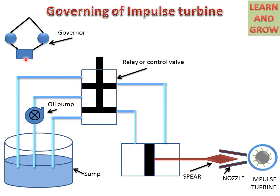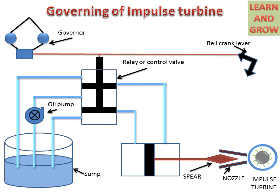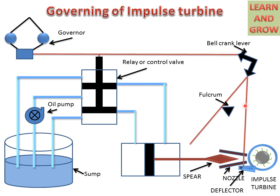This is the governor, which is connected to the turbine by different arrangement and gives rotation of the turbine according to load changes. This is the bell crank lever, which is connected with the sleeve of the governor. One end of the bell crank lever is connected to the deflector, and the other end is connected to the roller and cam. This cam is attached to the spear. There is a fulcrum for providing support to the lever.